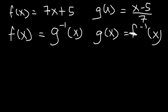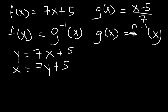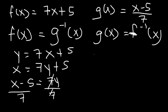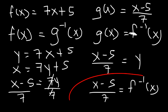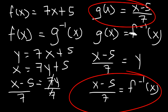Let's find the inverse of f just to verify. Let y = 7x + 5. Switch x and y to get x = 7y + 5. Subtracting 5 from both sides gives x − 5 = 7y, and dividing both sides by 7 gives y = (x − 5)/7. So (x − 5)/7 is the inverse function of f, which is the same as g(x), confirming that f(x) and g(x) are inverses of each other.